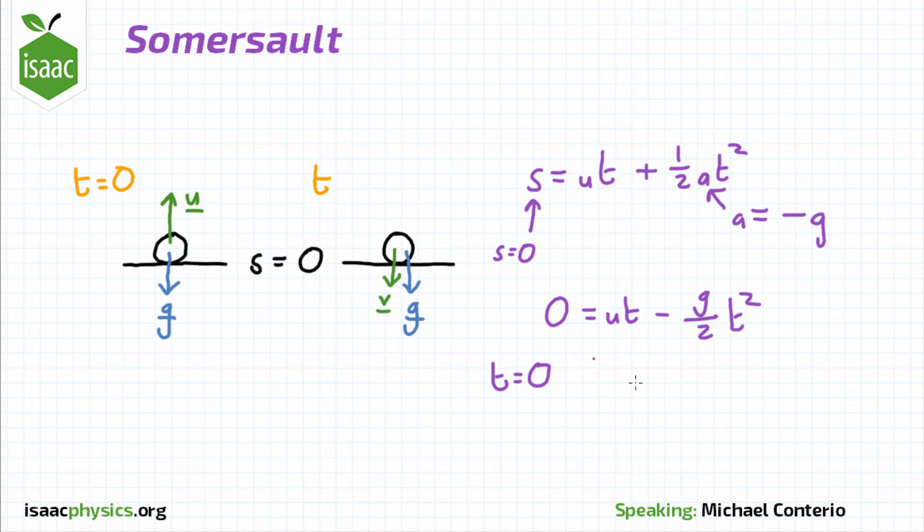The other more interesting solution gives u minus gt over 2 equals 0. We can then rearrange this in order to work out u in terms of g and t.